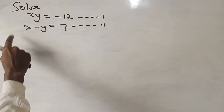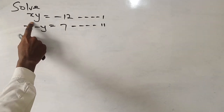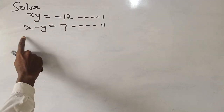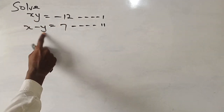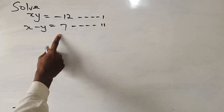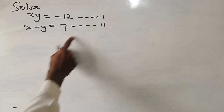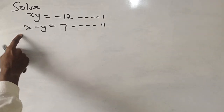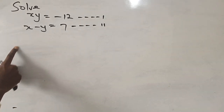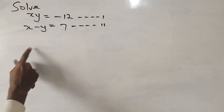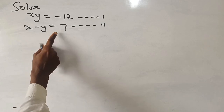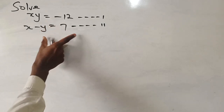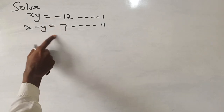To solve this equation, we have x times y equals minus 12, and we have x minus y equals 7. Equation 1, equation 2. How do we resolve this? This is a set of two linear equations — a simultaneous equation.